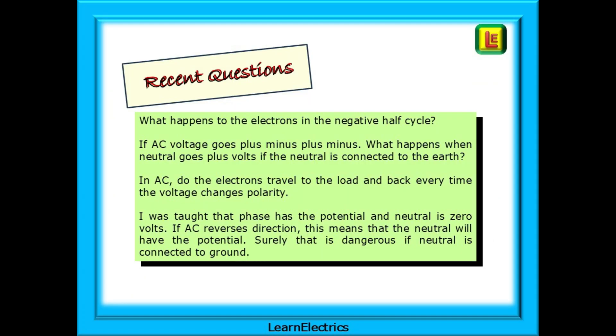Some very recent questions that have been asked have included such things as what happens to the electrons in the negative half cycle? If AC voltage goes plus minus, plus minus, what happens when the neutral goes plus volts if the neutral is connected to the Earth? In AC, do the electrons travel to the load and back every time the voltage changes polarity? I was taught that phase has the potential and neutral is zero volts. If AC reverses direction, this means that the neutral will have the potential. Surely, that is dangerous if neutral is connected to the ground.